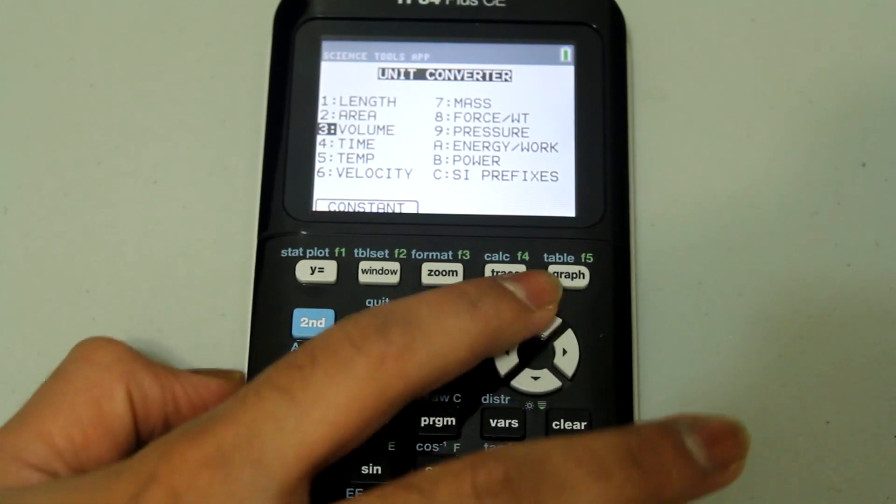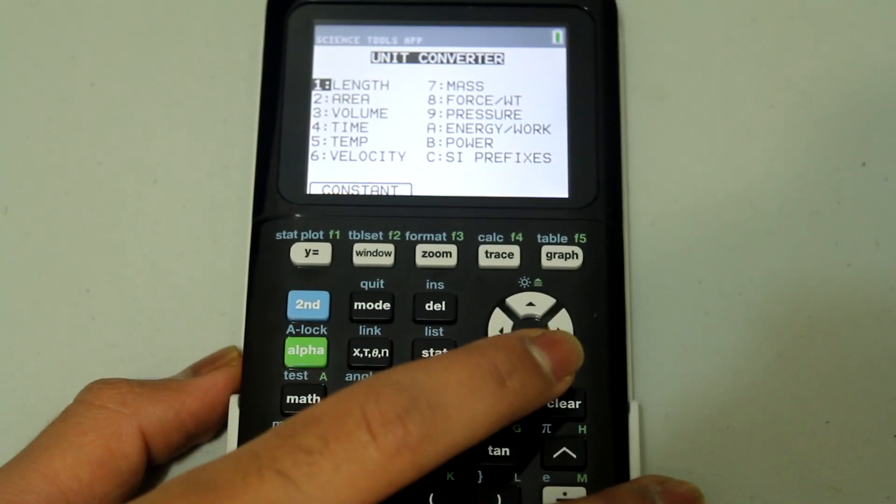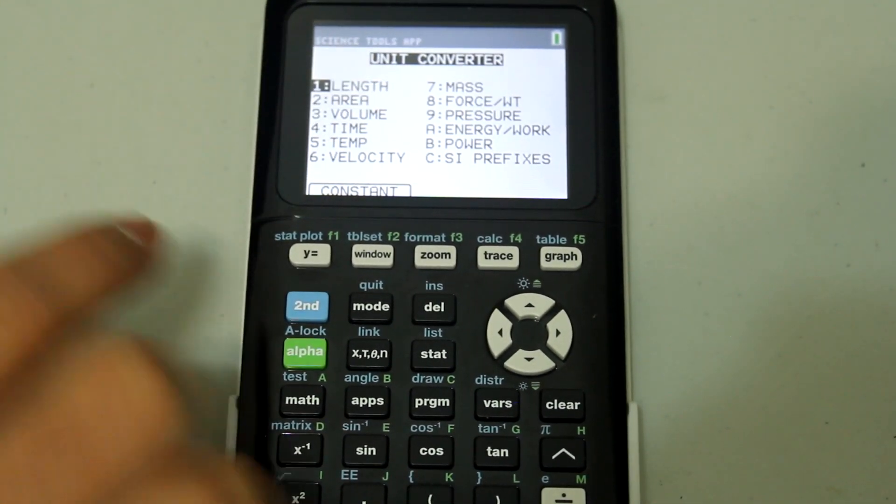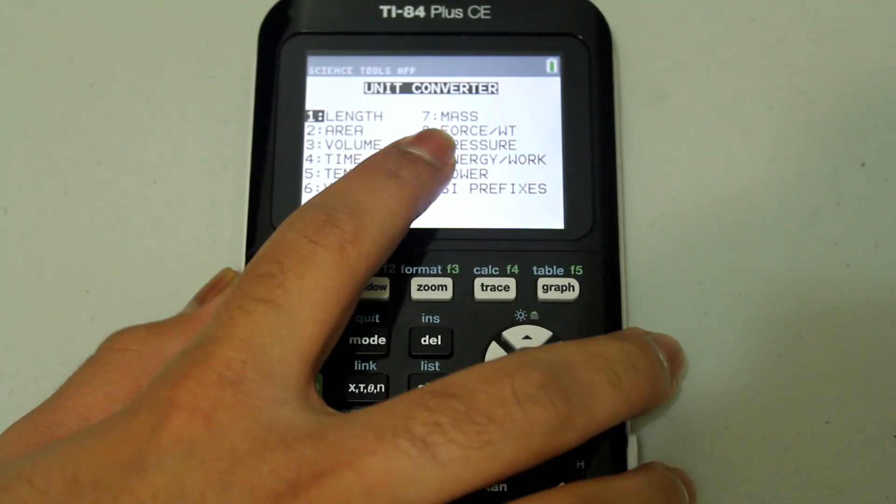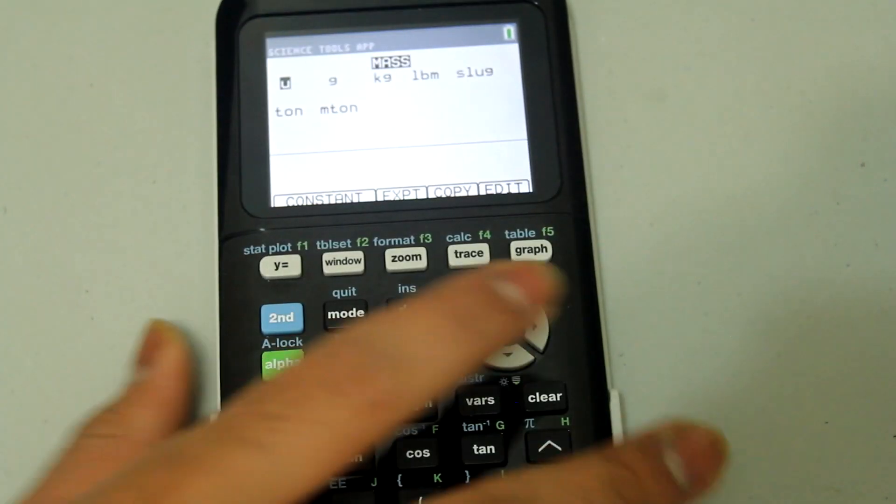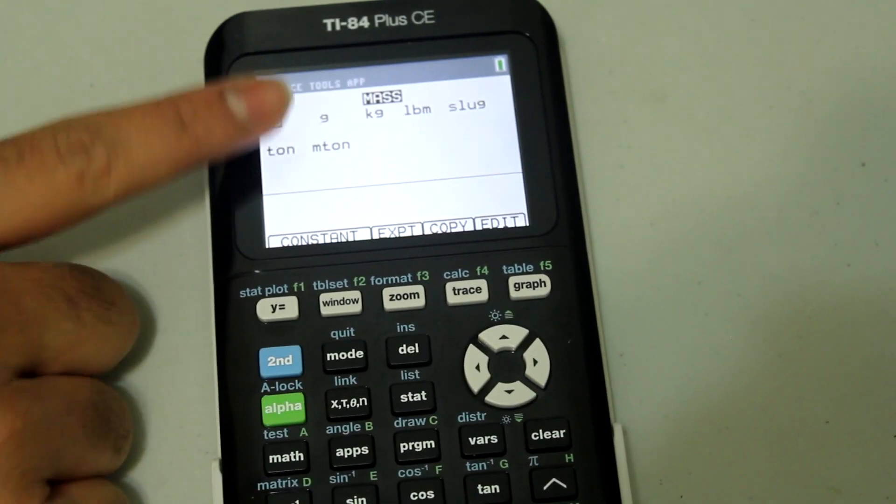So that might be tedious on the test, so what you might want to do is if the unit converter you're interested in is, for example, mass, the number next to mass is 7, so just press number 7 and that takes you to the unit converter in mass.